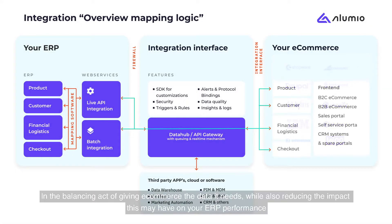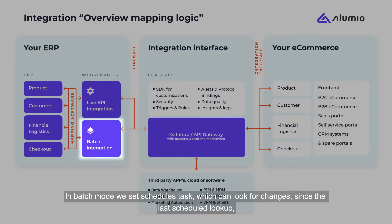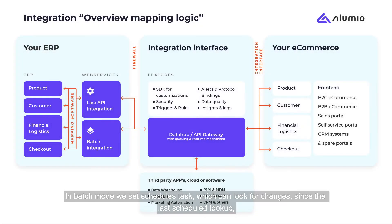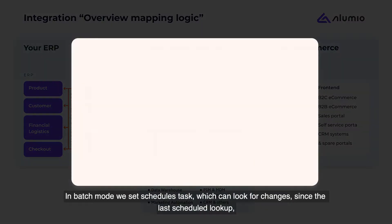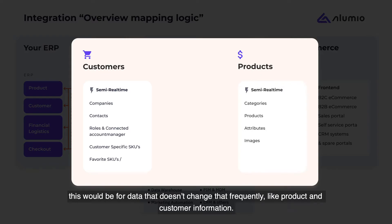In the balancing act of giving e-commerce the data it needs while also reducing the impact this may have on your ERP performance, we define what data comes over from a live lookup versus from a batch lookup. In batch mode, we set scheduled tasks which can look for changes since the last scheduled lookup. This would be for data that doesn't change that frequently, like product and customer information.